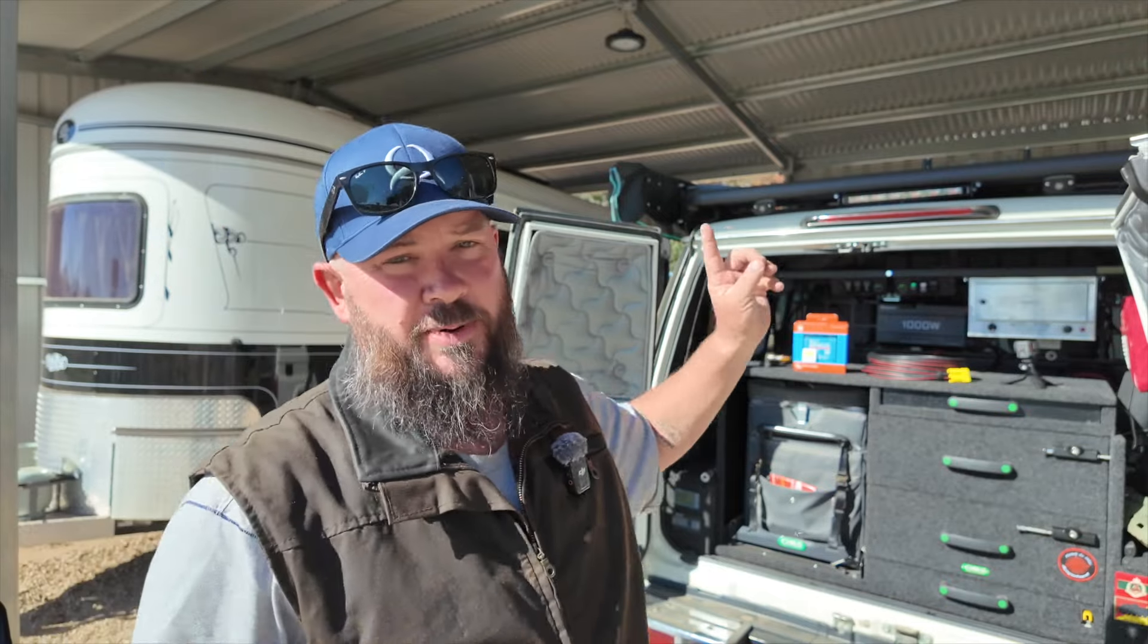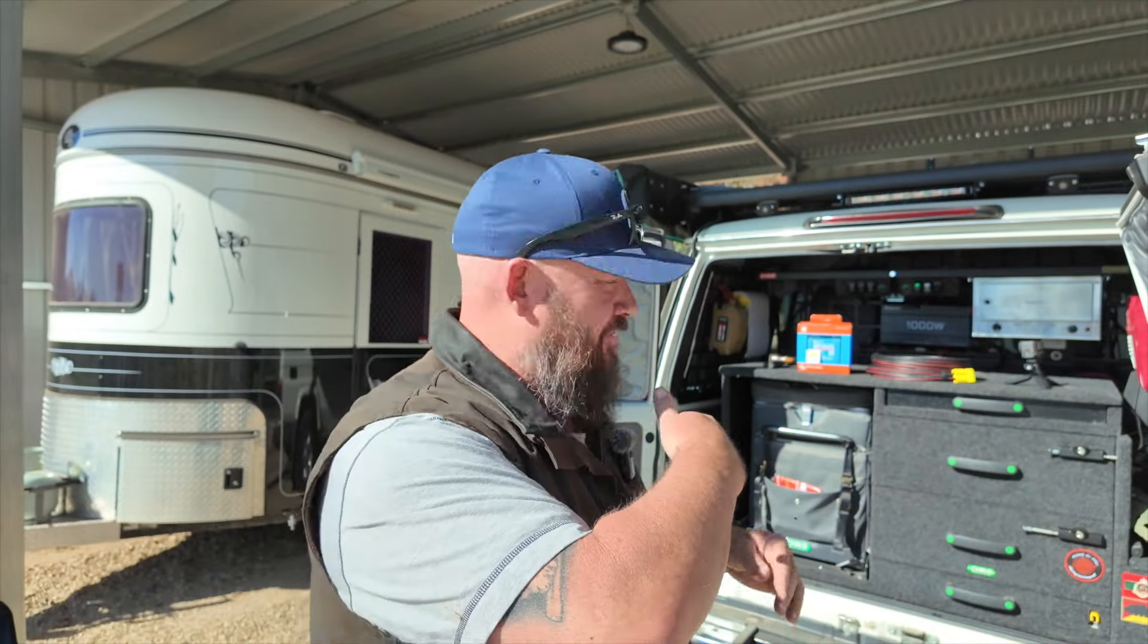I've got the Red Arc DC DC charger in the back there. The solar panel on the roof goes to that, and that's what regulates it. It actually goes through the DC hub, the Egon hub, then into the DC DC controller, then to the battery.